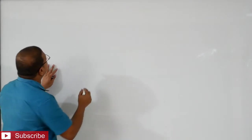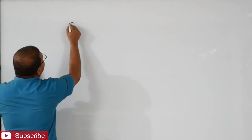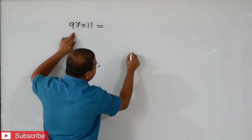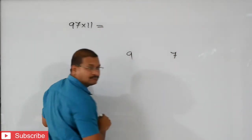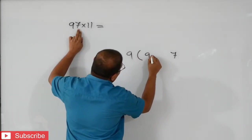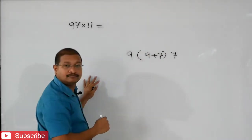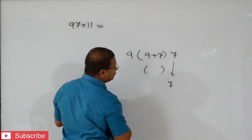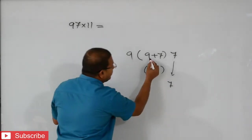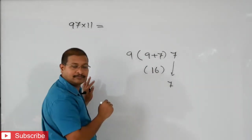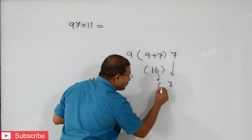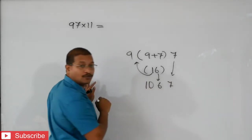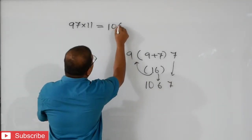Let us see the next number. Now we will try 97 into 11. That means we will write 9, 7. After that, in the middle, 9 plus 7. Then first we will write 7. See, 9 plus 7 is 16. That means 6 will write here. Then this 1 will add to 9. That means 10. So we will get 1067.